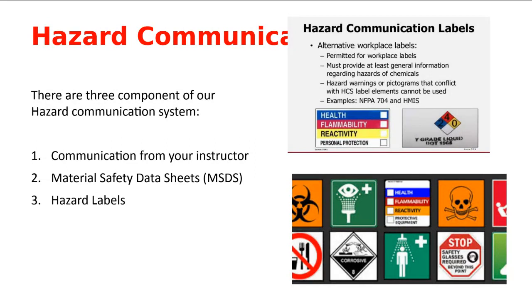The third element is hazard labels, which come in three different forms: a bar label, a diamond label, or a globally harmonized label. People are moving toward globally harmonized labels so that people who don't speak the language of a particular facility or country are all on the same page. I like a combination — either the bar and diamond label plus a globally harmonized label. I won't expect you to know all of them, but I'll show you which ones I want you to know.